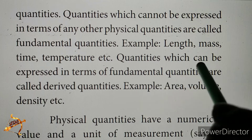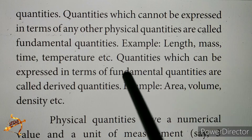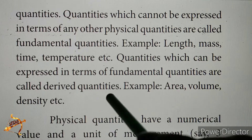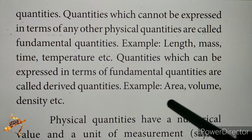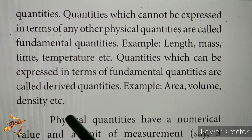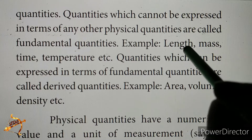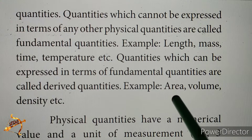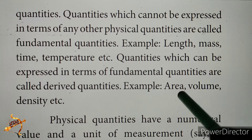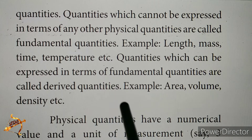Quantities which can be expressed in terms of fundamental quantities are called derived quantities. Examples include area, volume, and density. Area means meter squared — if you measure length, it is in meters, and since area is length times breadth, it is meters squared. That is why length is the fundamental quantity and area is the derived quantity.